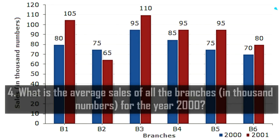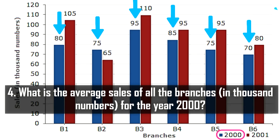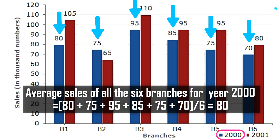The second question asks: what is the average sales of all branches in thousands for the year 2000? We note the sales figures for all branches in 2000: 80, 75, 95, 85, 75, and 70. Finding their mean by dividing the sum by 6 gives an answer of 80 thousand. This concludes the bar chart illustration.